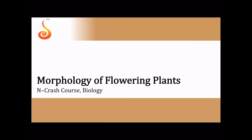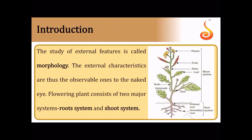Welcome to this crash course biology lecture. Today we will be doing a synopsis or overview of morphology of flowering plants. Morphology is the study of external features of a plant or any organism. When you look at the external features of a typical plant, you can identify the aerial or shoot system and the subterranean root system, which constitute the major parts of plant morphology.